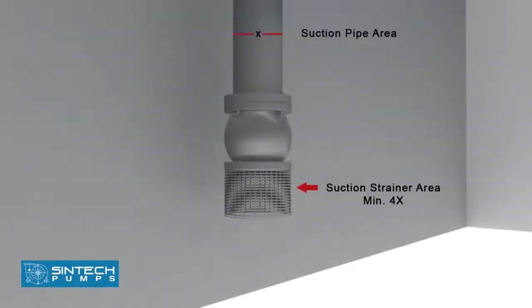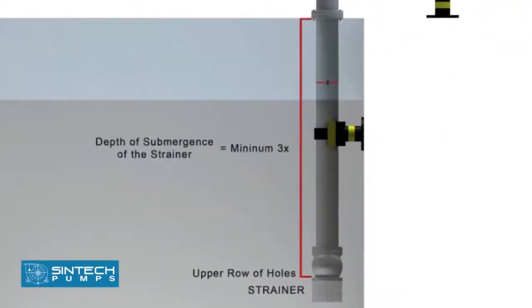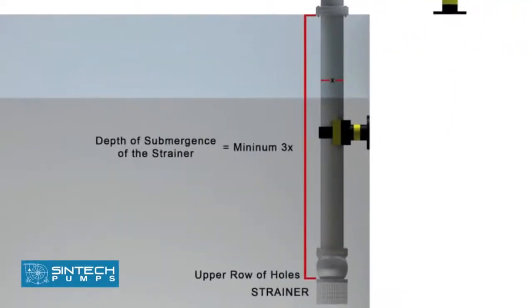The suction strainer must be at least 4 times the suction pipe area and the mesh size should screen out solid particles that could clog the impeller. The minimum depth of submergence of the strainer should be at least 3 times the pipe diameter measured from upper row of holes of strainer.